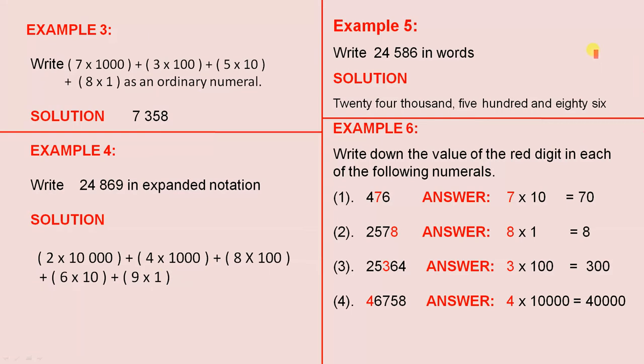Example 5. Write 24,586 in words. 24,586. And that is correct.